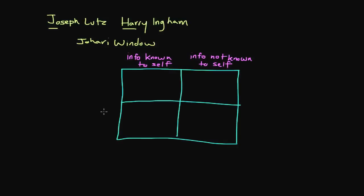And in these two rows, these deal with people and their understanding of us. And so in this first row, this is information or info known to others. Meaning this is the area in which people actually know things about us. And in this last row, this is info that is not known to others. Meaning they have no knowledge of these particular characteristics, skills, abilities, whatever it is that we're talking about.